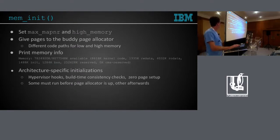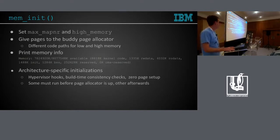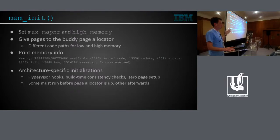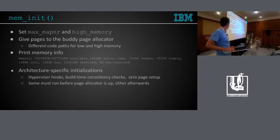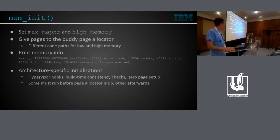Then another piece of memory initialization is mem_init. For the most part, it gives pages to the page allocator and background page allocator. After it finishes, you can do page_alloc and slab_alloc. Some architectures set the maximal PFN of mapped memory and the minimal PFN of high memory. All of them print how much memory we have. And since it's the last architecture-specific call hook from generic start_kernel, different architectures do different things — the larger the architecture, the more things they usually do.